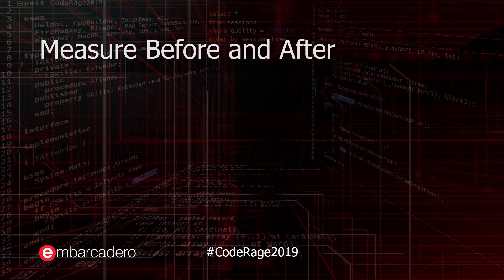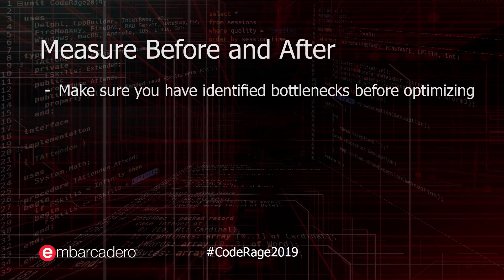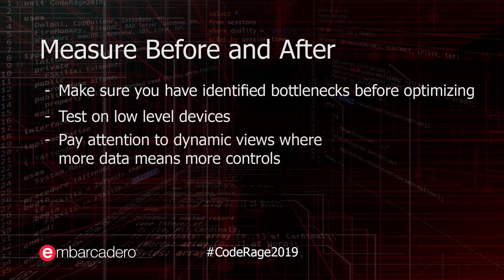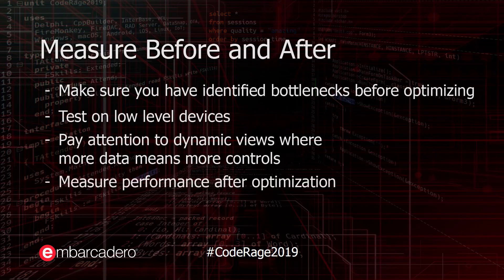Optimizing takes time. Make sure you have identified bottlenecks before optimizing — there is no point in optimizing parts that already perform well. You should also test layouts on low-end devices. If it works well on a low-end device, it will work great on a high-end one too. The other way around? Probably not. Dynamic views where more data means more controls can be problematic, and stress testing such layouts can be of utmost importance. You don't want your application to perform poorly in real-life scenarios. You need to verify performance before and after all optimizations are in place. Theory is one thing, practice another. Unexpected things can happen if you don't pay attention.